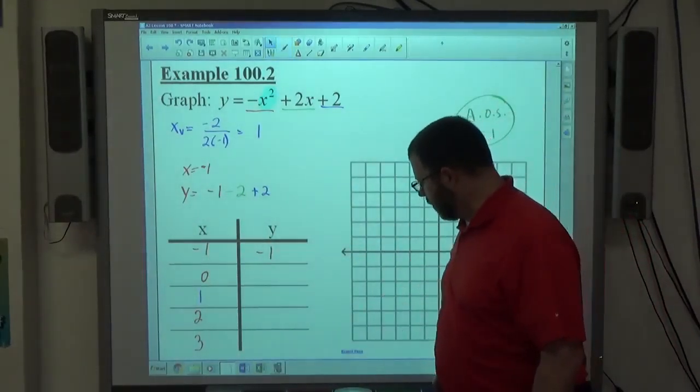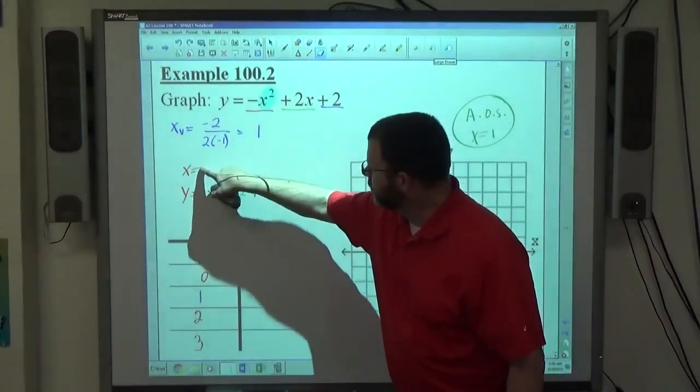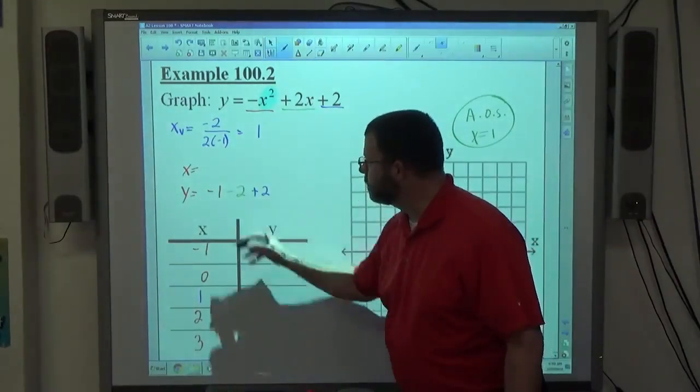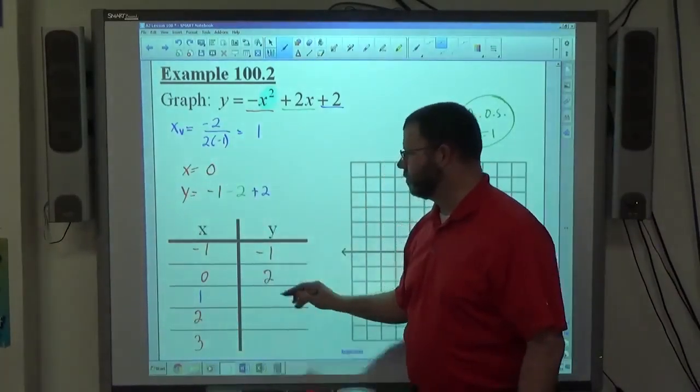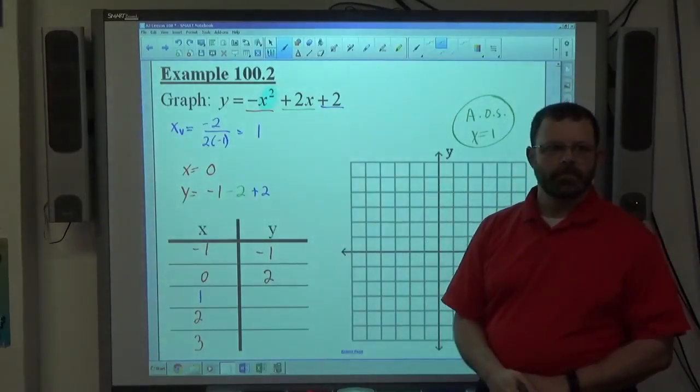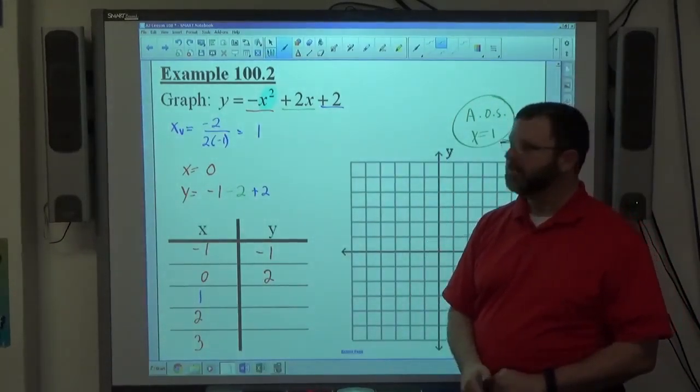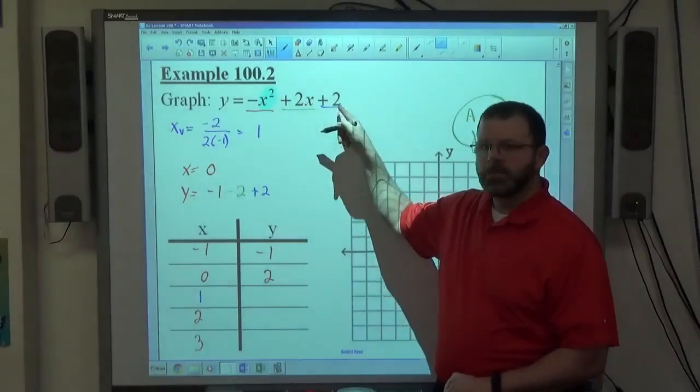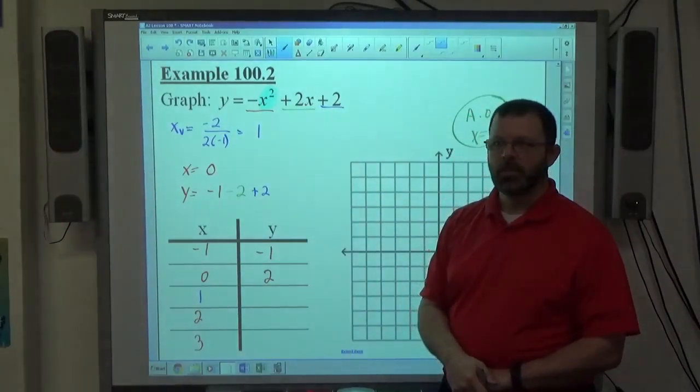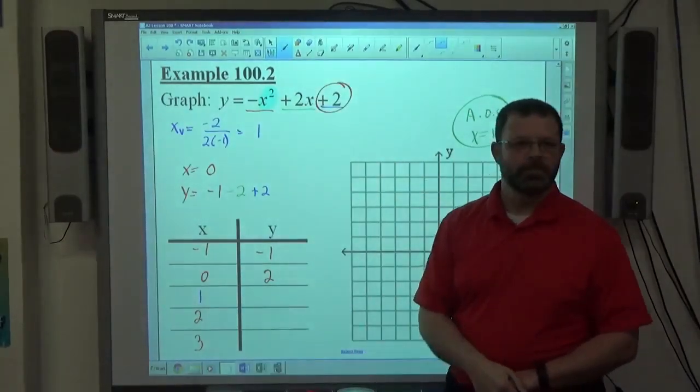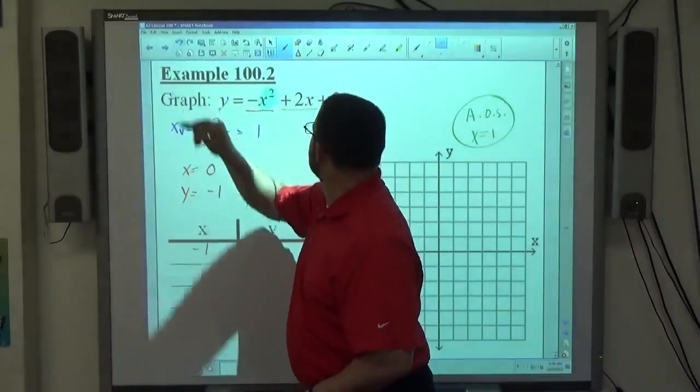If I go with x equals 0, the answer is 2. I like picking 0. Cancel, cancel, constant. 0, whatever this number is.